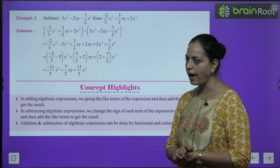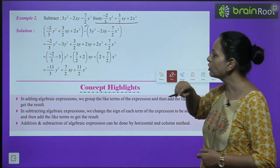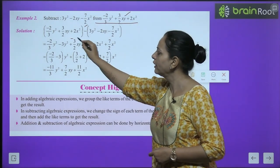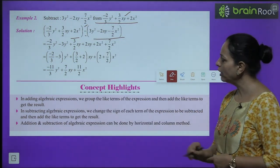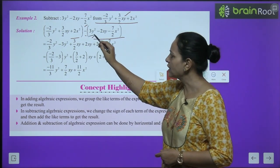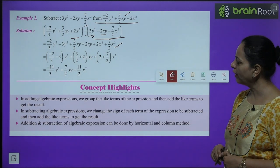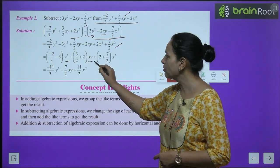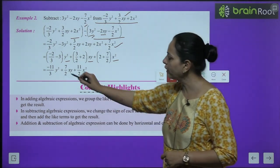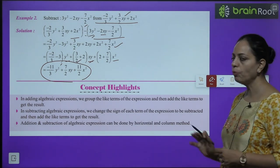Example 2: Subtract 3y² − 2xy − (7/2)x² from −(2/3)y² + (3/2)xy + 2x². Write the second expression first, then subtract the first. When a minus sign is outside the bracket, all signs inside change — so −3y² becomes +3y², +2xy becomes −2xy, etc. Collect the like terms — y², xy, and x² — then simplify. Practice such types of questions.